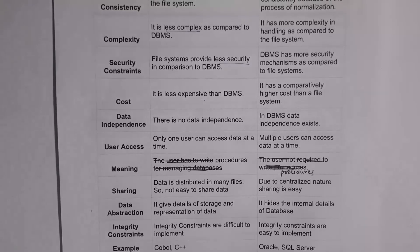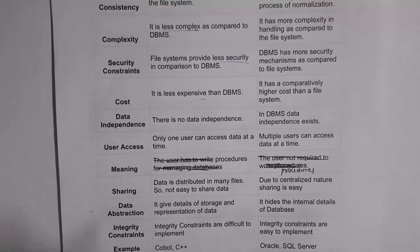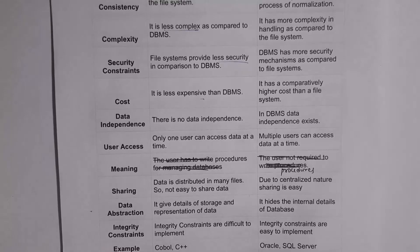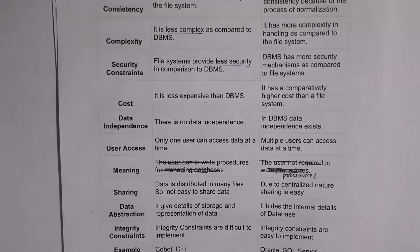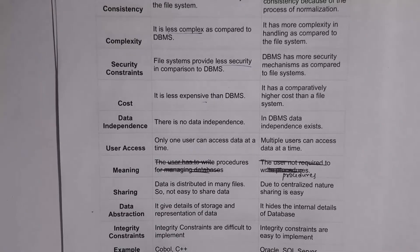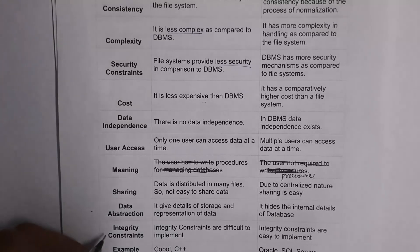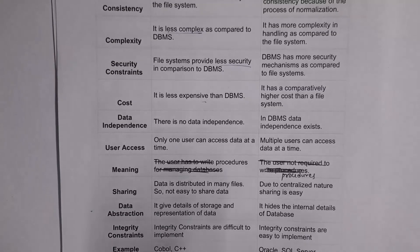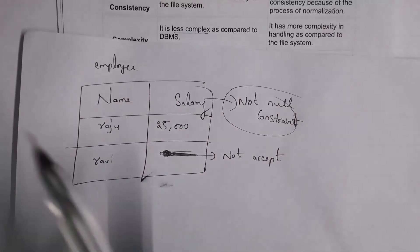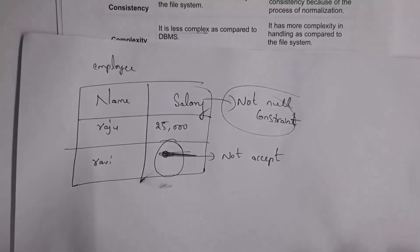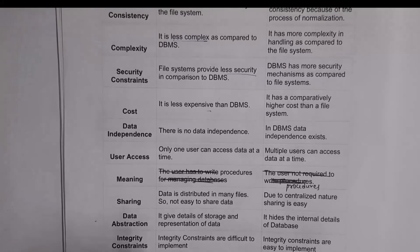In file system, different data is stored in different files, so there is no data independency. Whereas in DBMS, all data is stored in a single database, so there is data dependency. Only one user can use a file at a time, whereas multiple users can use one database at a time. There is no need to write procedures in files, whereas in DBMS we need to write procedures — for example, to get information about a student whose roll number is 25, we write: SELECT * FROM student WHERE roll_number = 25, which displays the entire record.